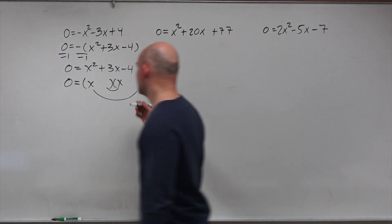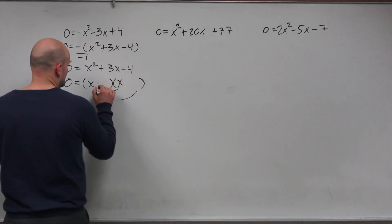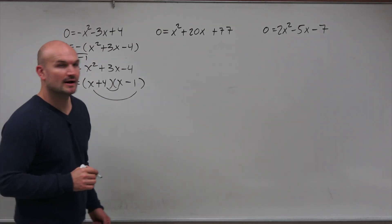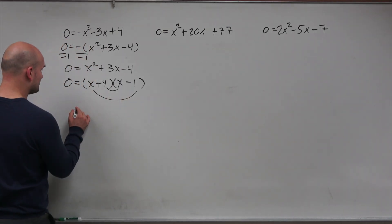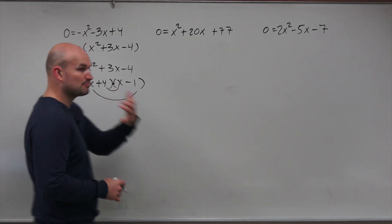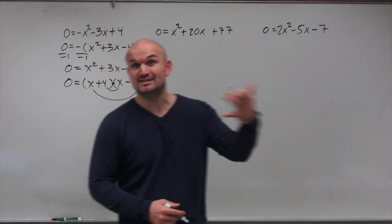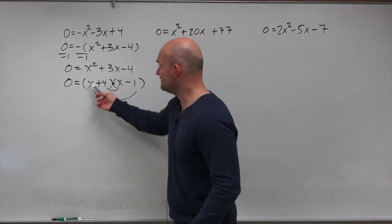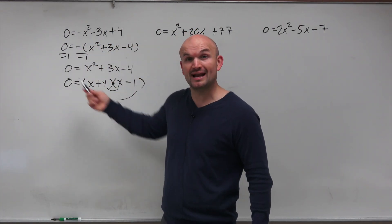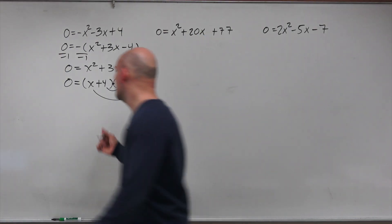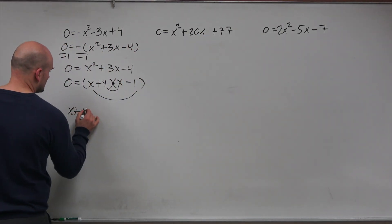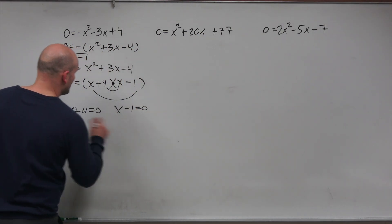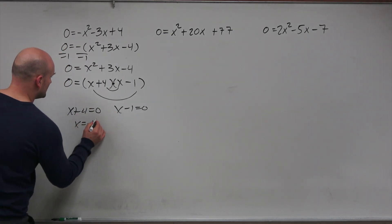Hopefully you're recognizing that's going to be positive 4 and negative 1. So now I can apply the zero product property — if you have a product equal to zero, one of these factors has to equal zero. So I set them both equal to zero, and then use inverse operations to solve.